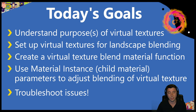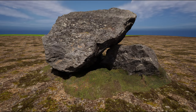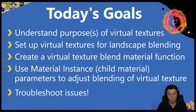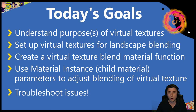Today we're diving into what are called runtime virtual textures. The idea is that we have actors like this rock in our landscape, and they don't exactly look like they go together. Can we communicate to our static meshes what the landscape looks like at a particular location, so that we can virtualize the texture of our landscape on part of that mesh? By the end of this episode, that's what we're going to have set up.